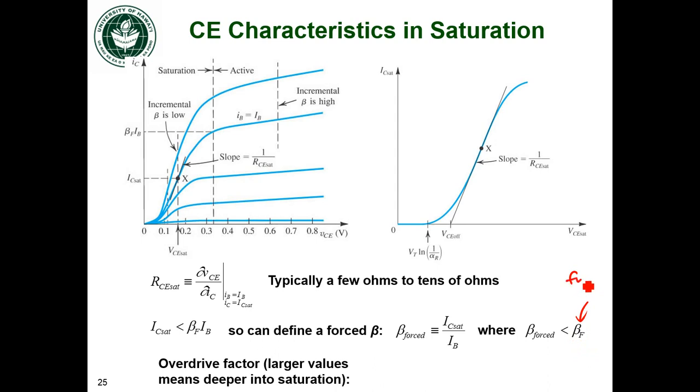That's beta sub f. This is beta in forward active mode. Your beta forced, which is the beta in saturation, is always going to be less than the beta that you get in forward active.